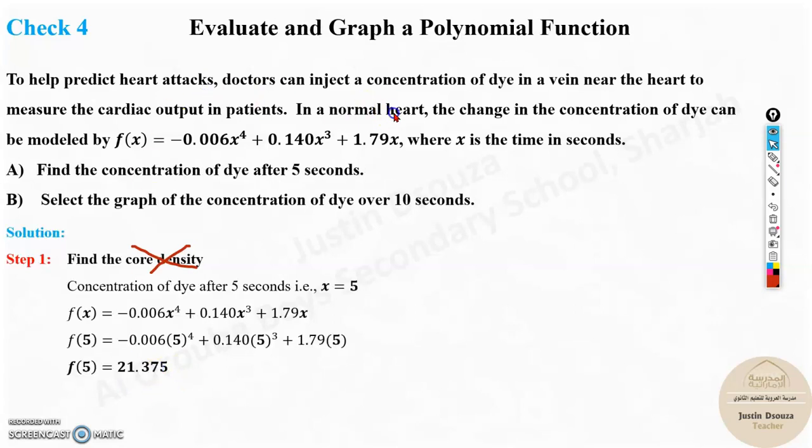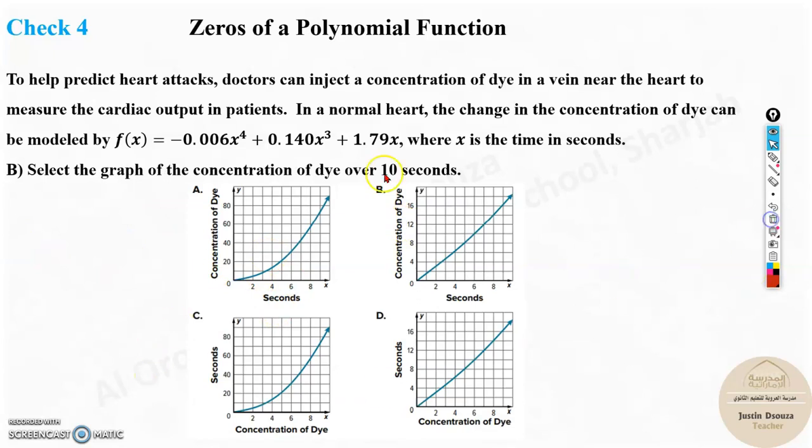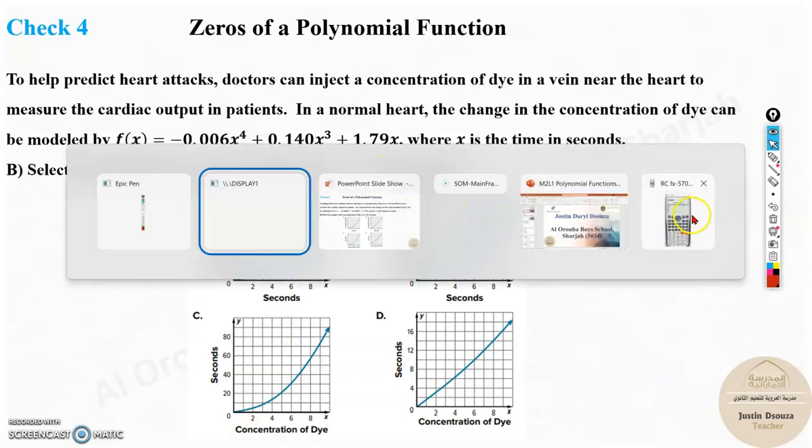Your units are not given, so leave it as it is, and then sketch the graph. In this case, you have 4 graphs, you need to find the correct answer. There is one shortcut method if you have options in the graph. Take out your calculator.